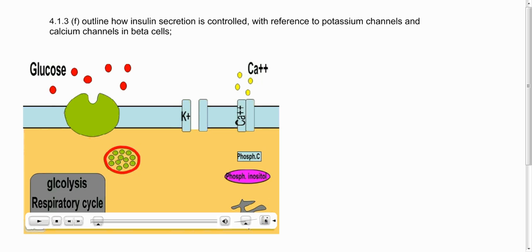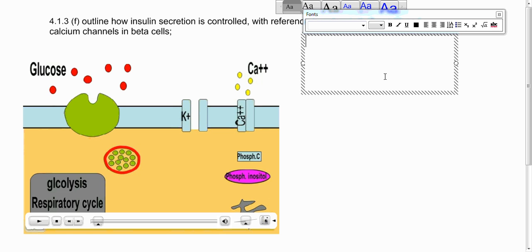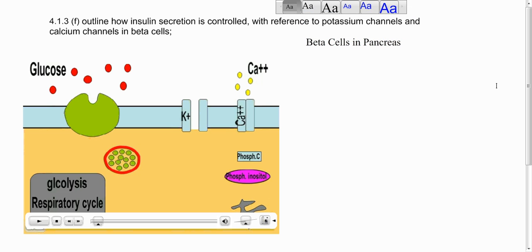So first of all just to let you know what cells we're talking about, I'm just going to type over here, these are beta cells in the pancreas. The pancreas is an organ that lies near your stomach and it has a couple of different types of cells which take part in blood sugar level control and the ones that we're interested in are beta cells.